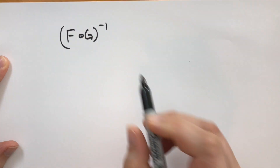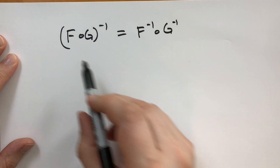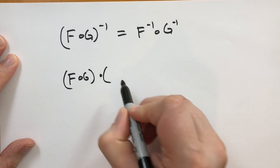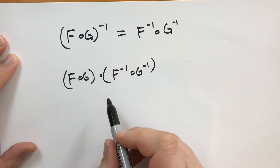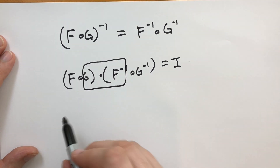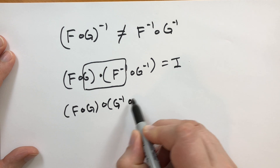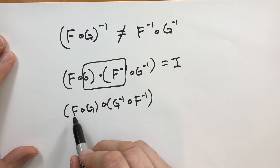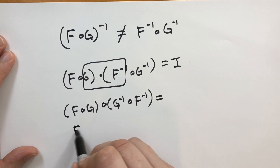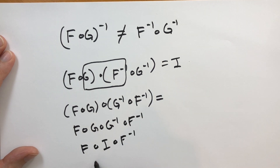Let's look at the inverse of a composition. You might naively think the inverse of F∘G is F^(-1)∘G^(-1), but that would be wrong — composing F∘G with F^(-1)∘G^(-1) doesn't give the identity because G composed with F^(-1) isn't simplifiable. What works is G^(-1)∘F^(-1). Taking F∘G∘G^(-1)∘F^(-1): the middle two become the identity, leaving F∘I∘F^(-1) = F∘F^(-1) = identity. So G^(-1)∘F^(-1) is indeed the inverse of F∘G.